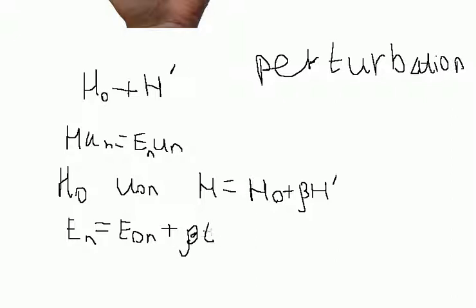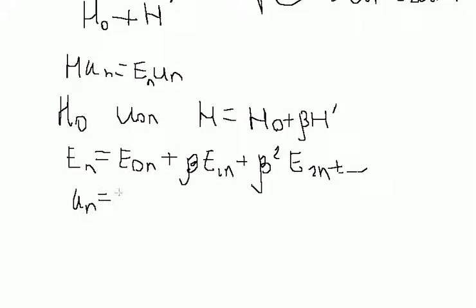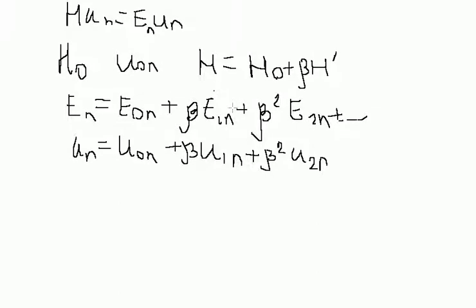The energy levels can be expanded as: E = E₀ + β·E₁ + β²·E₂ + and so on. Similarly, the wave functions are expanded starting from the zeroth-order wave function ψ₀, plus β·ψ₁, plus β²·ψ₂, and so on.